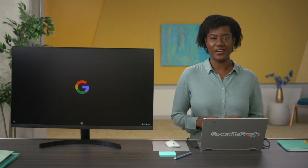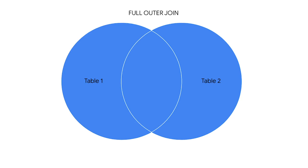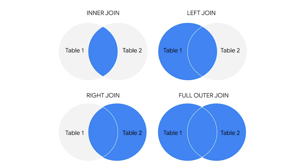Finally, there's outer join. Outer join combines right and left join to return all matching records in both tables — it'll return all records in both tables. If there are records in one table without a match, it'll create a record with null values for the other table. Using joins can make working with multiple data sources a lot easier and make relationships between tables more clear.